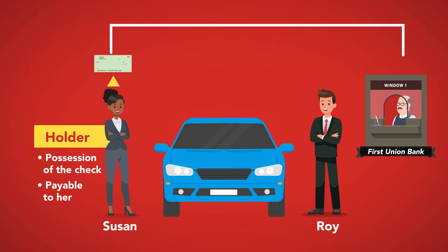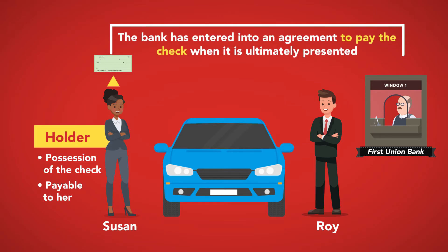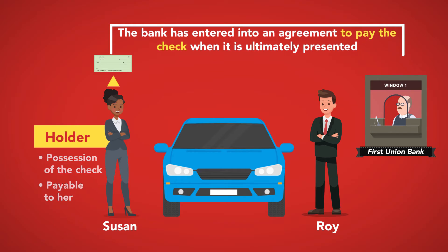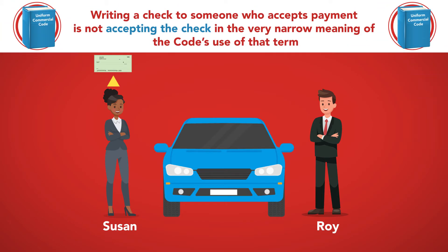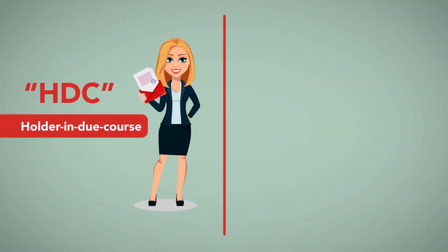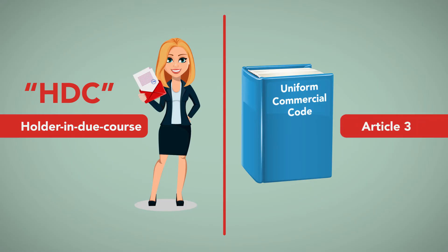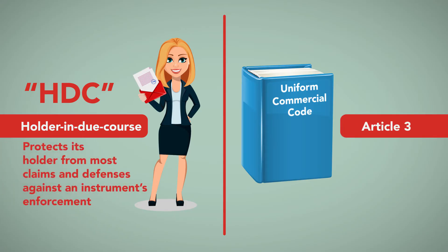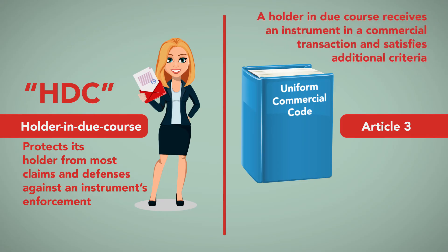Note the same would be true if the check was payable to bearer. In this transaction, by issuing the cashier's check, the bank has entered into an agreement to pay the check when it is ultimately presented, probably by Susan or her bank. Note that simply writing a check to someone who accepts payment is not accepting the check in the very narrow meaning of the code's use of that term. Another designation a person may have in a commercial payment is holder in due course, or HDC. HDC status is one of the most remarkable aspects of Article 3, as such status protects its holder from most claims and defenses against an instrument's enforcement.